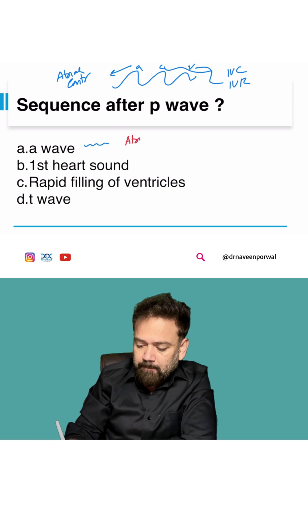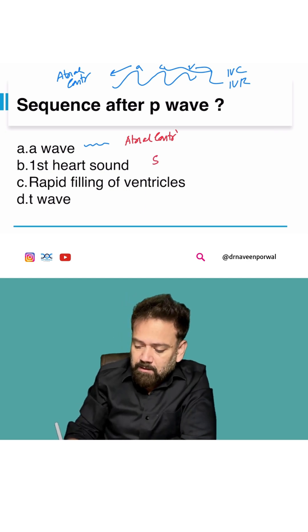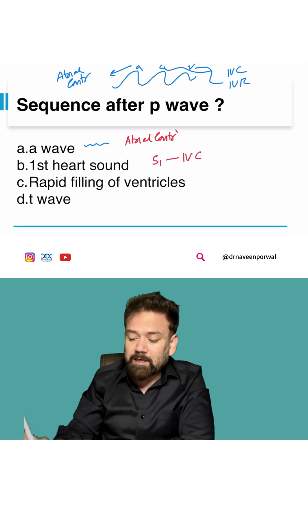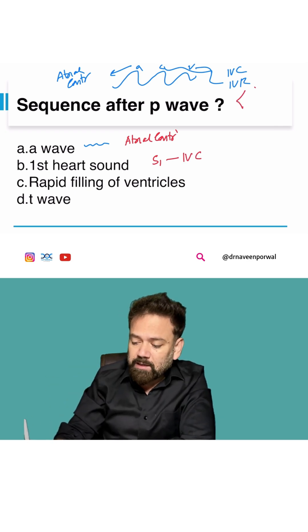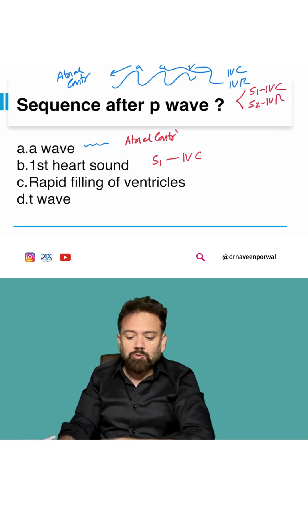Atrial contraction, then first heart sound S1. S1 is always followed by IBC (isovolumetric contraction). If you remember, I have discussed in cardiac cycle so many times: S1 is followed by IBC, S2 is followed by IBR (isovolumetric relaxation).